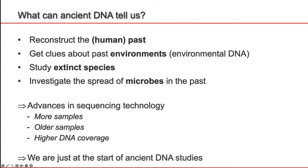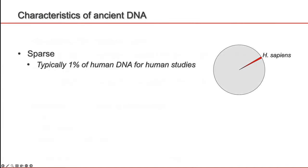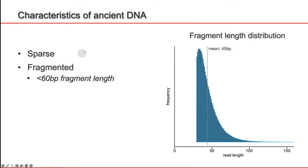So what is ancient DNA and why is it so difficult to work with? Here I am listing the characteristics of ancient DNA to show you why it is so important to have a good workflow to map ancient DNA. Typically, ancient DNA is sparse — only one percent of sequences are of human origin. Due to degradation processes, the DNA is fragmented into small pieces, typically less than 60 base pairs in length, which creates problems while sequencing and during mapping.